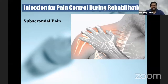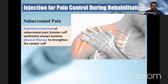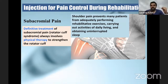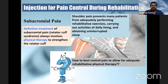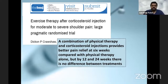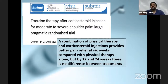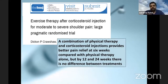Next is injection for pain control during rehabilitation. One is subacromial pain. The definitive treatment is physical therapy to strengthen the rotator cuff. However, shoulder pain usually prevents adequate rehabilitative exercises, even affecting quality of daily life including sleep. So how to best control pain to allow for adequate rehabilitative physical therapy? A wonderful article in the BMJ found that a combination of physical therapy along with corticosteroid injection gave the best pain relief at six weeks compared to physical therapy alone. But at longer follow-up, there was no difference. It acts as a bridge window - you give a steroid shot for the subacromial pain, it will give a window for good rehabilitation to happen, and you have a pain-free interval initially wherein physical therapy will eventually take over.